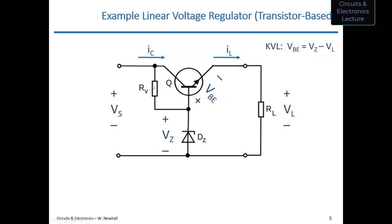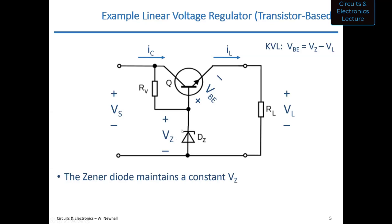Between the Vs node and ground, you have a resistor and a zener diode. The zener diode has current flowing through it in the reverse direction, maintaining a relatively constant Vz value. This helps maintain a constant load voltage VL. The transistor is the valve controlling current flow through the load — when Vs is higher than VL, current flows through the transistor to the load.